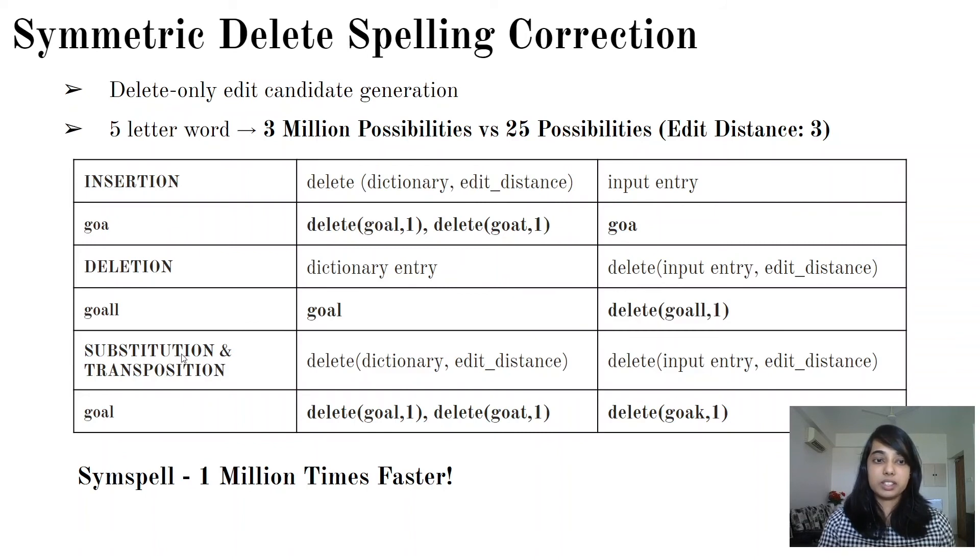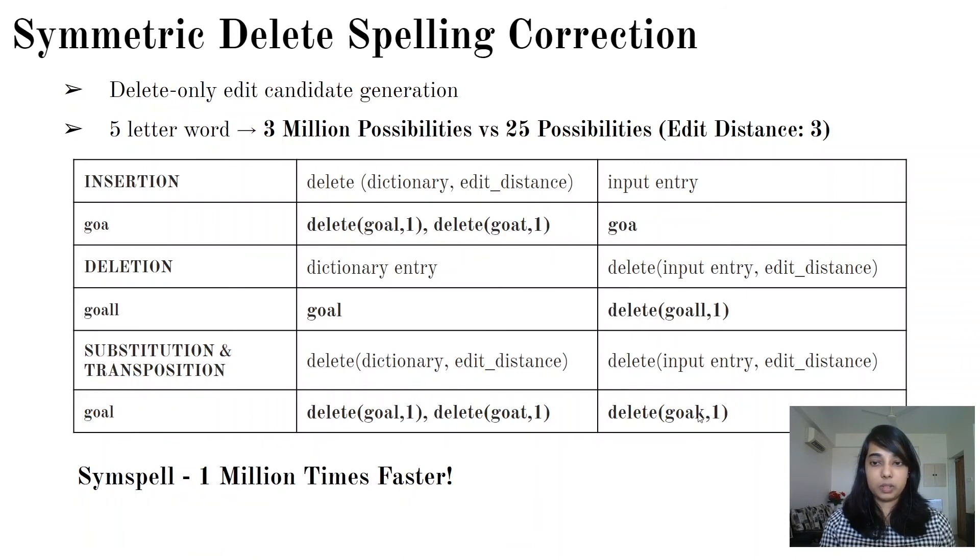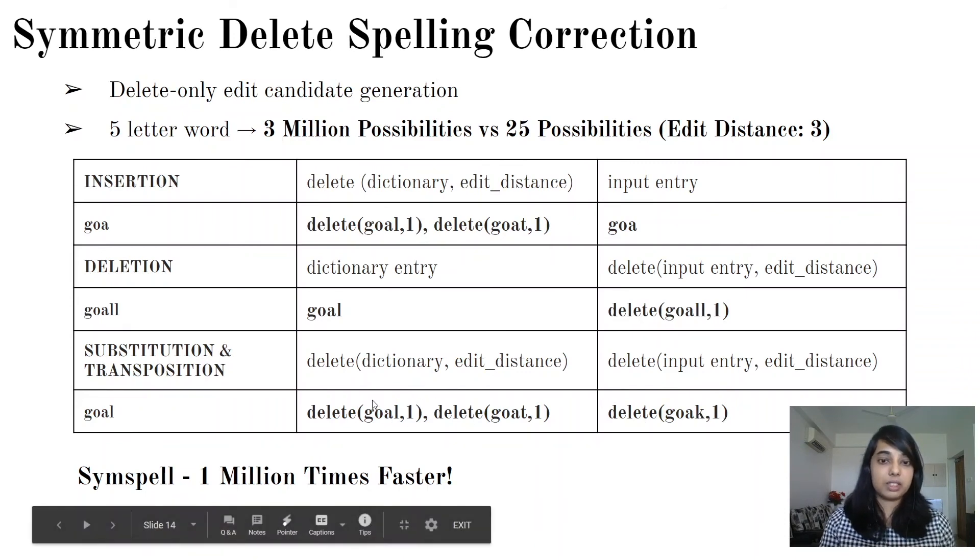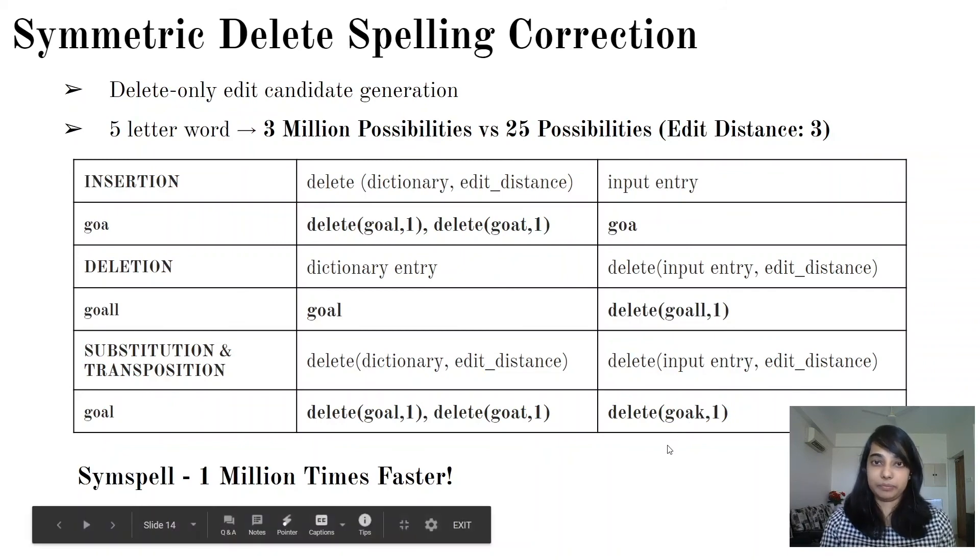When you take the example of substitution and transposition, it does deletion on both the input and the dictionary. If you see it will delete one character from here and also delete one character from there. The 'k' goes out and the 'l' goes out and then you equate 'goa' with 'goa'. You do get suggestions like 'goal' and 'goat' as probable suggestive spellings of the spelling error which is 'goak'.